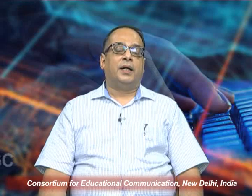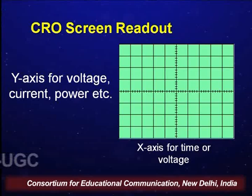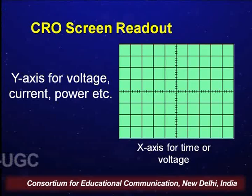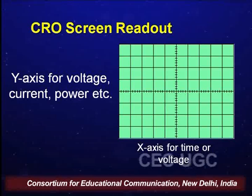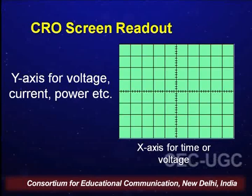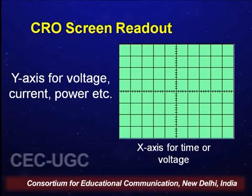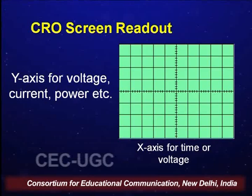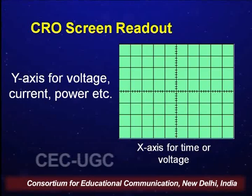Typically the screen of a CRO looks like this. It is divided into graticules wherein the x-axis is for plotting time or voltage and the y-axis for voltage, current, and if plotted together, power. The amplitude of the signal is determined by use of these graticules. It is just like a 2D graph, but instead of using a pencil, we use a cathode ray — a fancy name for a beam of electrons.